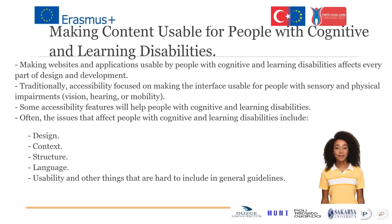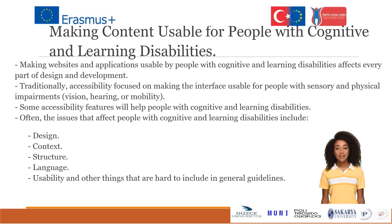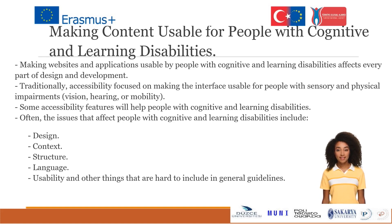Making content usable for people with cognitive and learning disabilities affects every part of design and development. Traditionally, accessibility focused on making the interface usable for people with sensory and physical impairments — vision, hearing, or mobility. Some accessibility features will help people with cognitive and learning disabilities, but the issues that affect them include context, structure, language, usability, and other things that are hard to include in general guidelines.